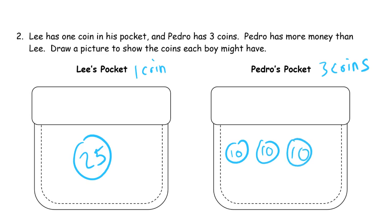And 30 is going to be more than 25. So does Pedro have more money than Lee? Yes, he does — he's got 30 cents. And this is 25 cents, because it's just 25.